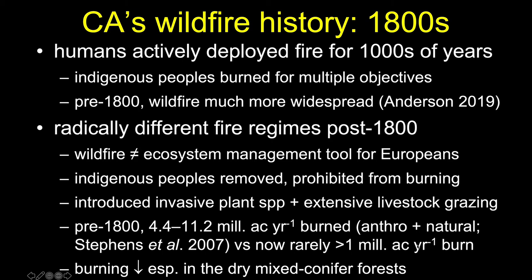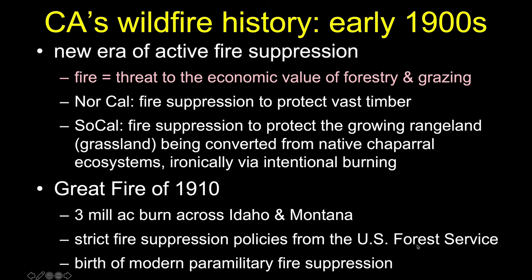Burning overall in that period has radically gone down, particularly in the dry mixed conifer forests because of interest in harvesting timber for economic uses. By the time the early 1900s rolled around, we're in a new era of active fire suppression. The idea is that fire is seen as a threat to the economic value of forestry and, to a lesser extent, grazing in our grasslands and shrublands.